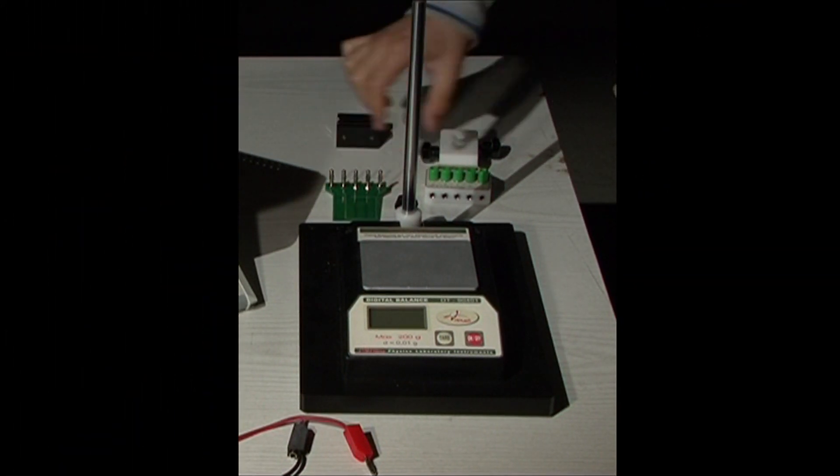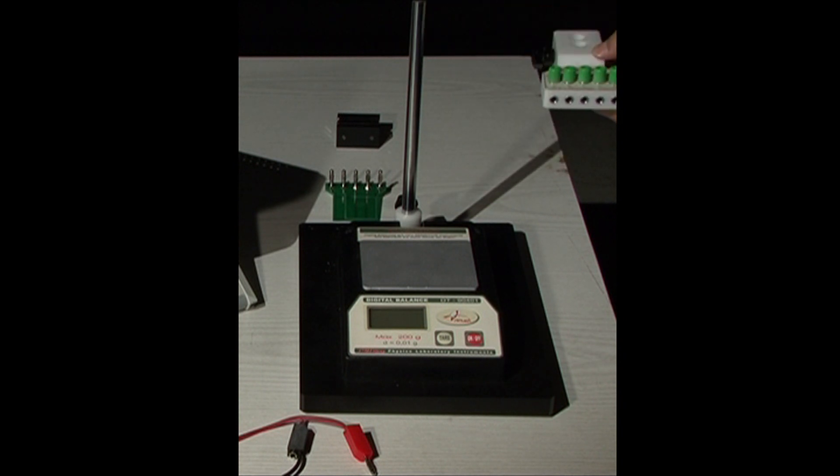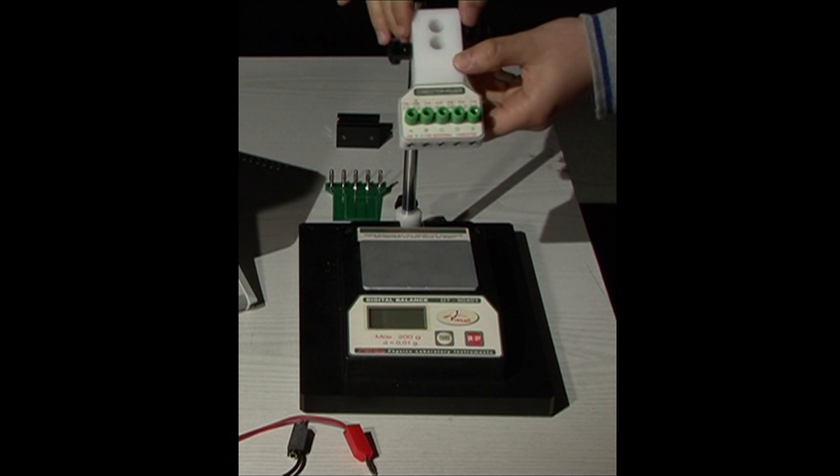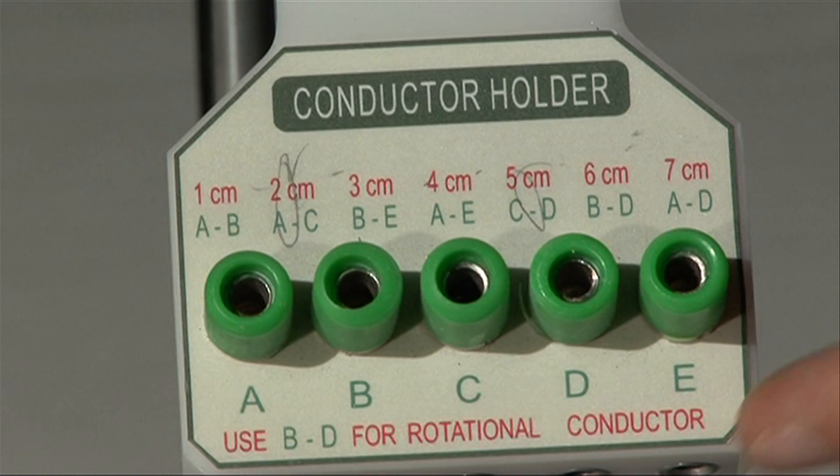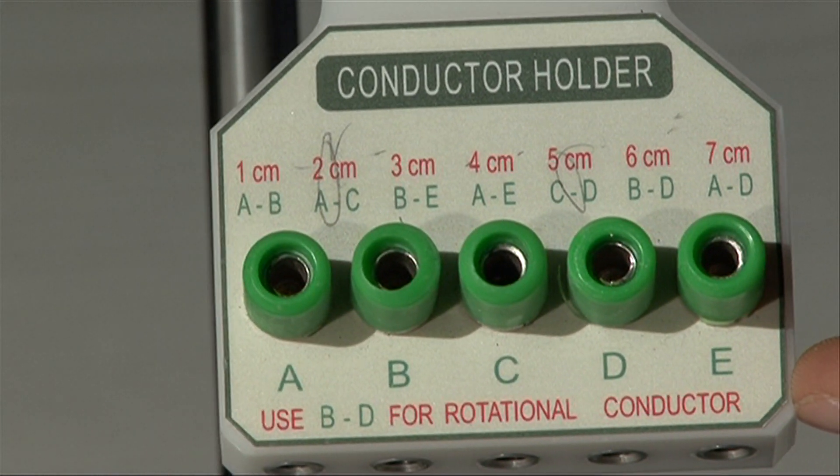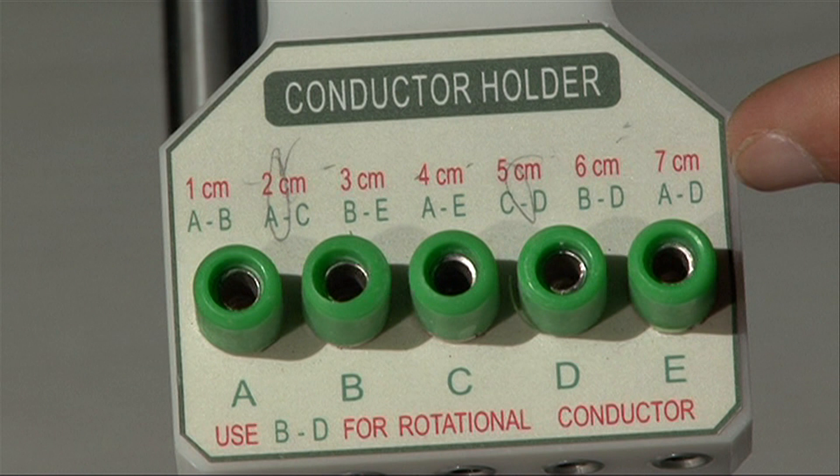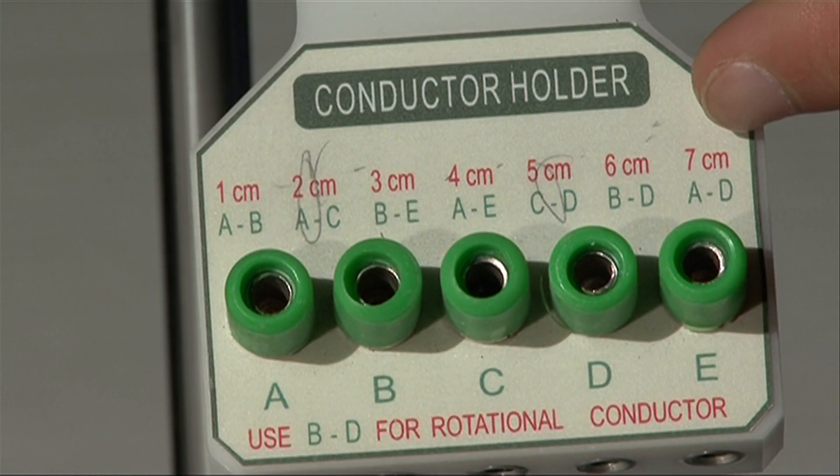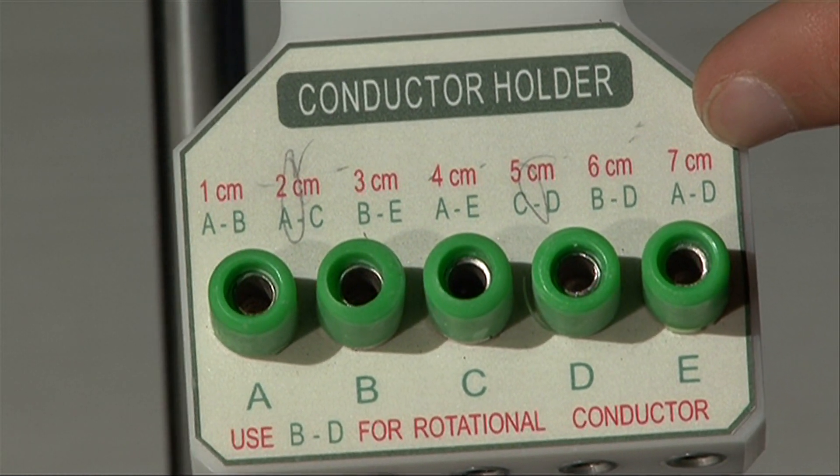There is another apparatus which will be fixed on the support to connect the wires to the circuit. On this apparatus, each slot is named with a letter. The effective horizontal length between slots that can be connected is indicated on each slot.